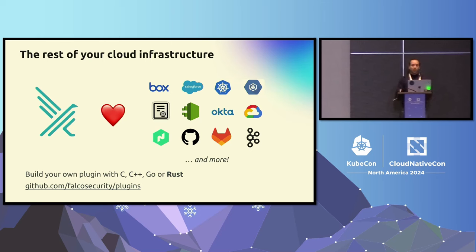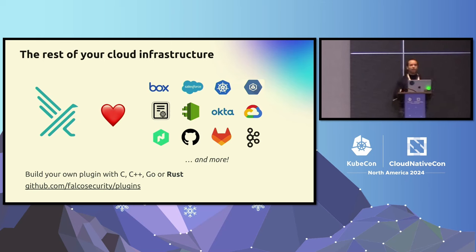You can find plugins for AWS CloudTrail, Okta Logs, GCP, Kubernetes audit events, and many more. And if that's not enough, you can create your own plugin in your preferred language. We recently received a visit from the Rust Evangelism Strike Force, so we now have Rust support as well, along with C, C++, and Go, which we've had since the plugin system existed.